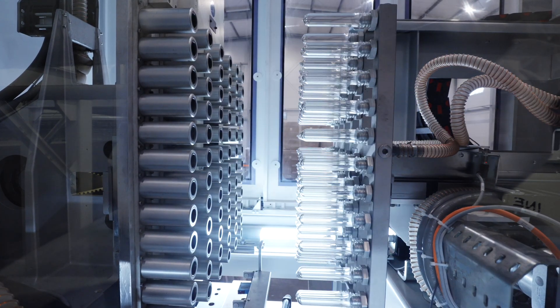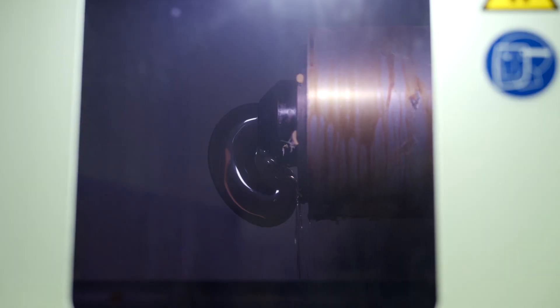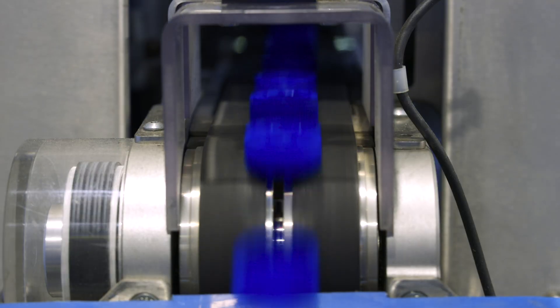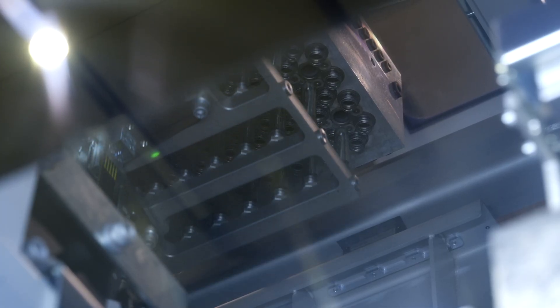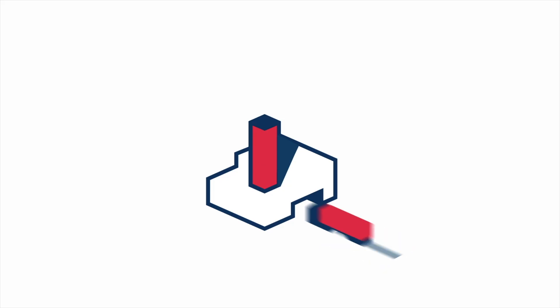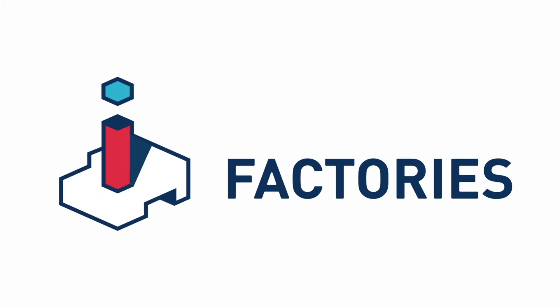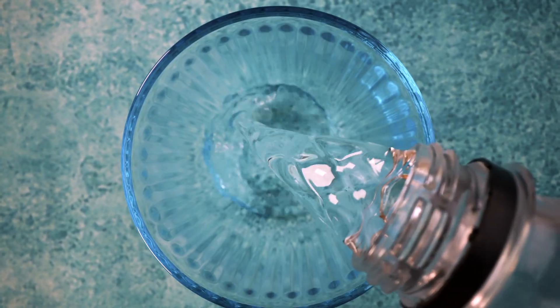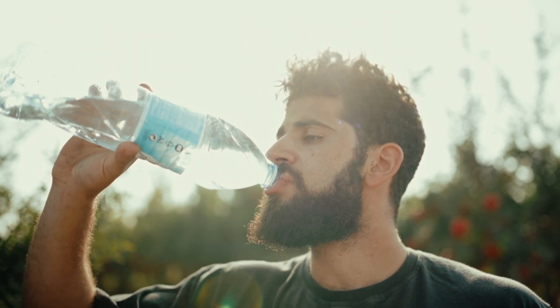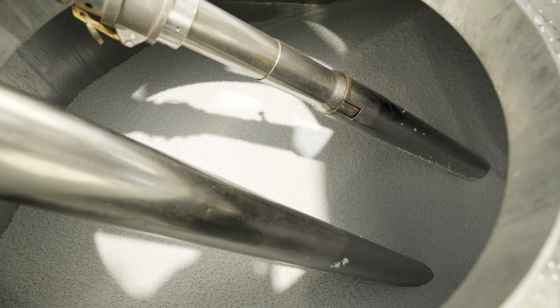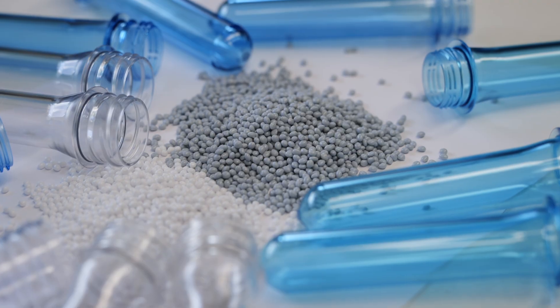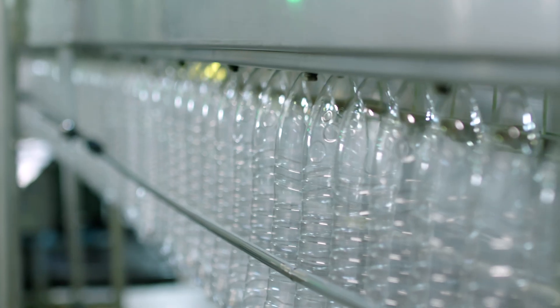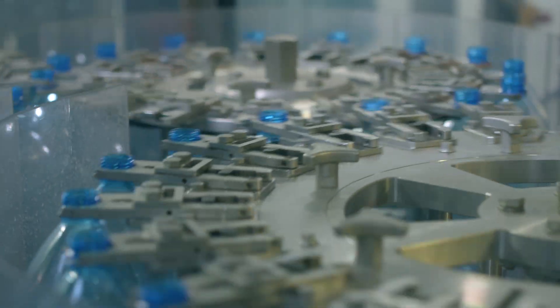In this episode, we will see how preforms for manufacturing PET bottles are made. Nearly all of us use PET bottles. They are light and easy to recycle. Where does the name PET come from? It is an acronym for polyethylene terephthalate, a thermoplastic polymer used to manufacture synthetic fibers and bottles. But what needs to be done to transform this plastic material into a bottle?